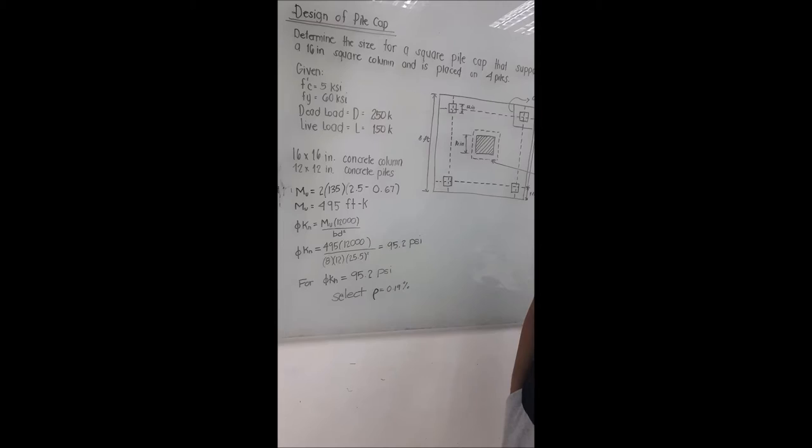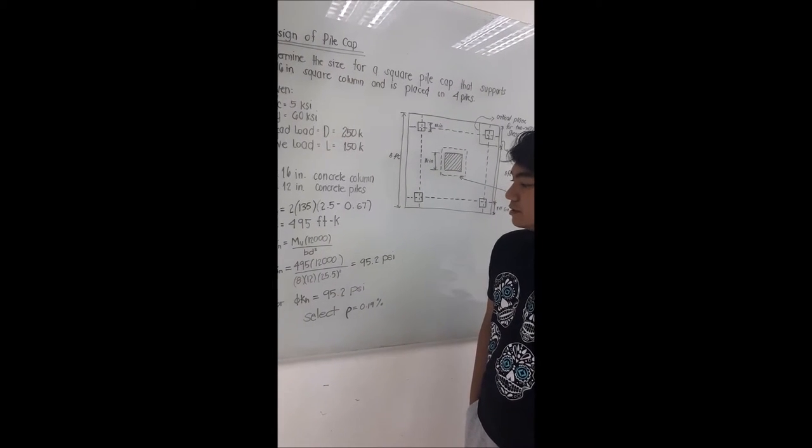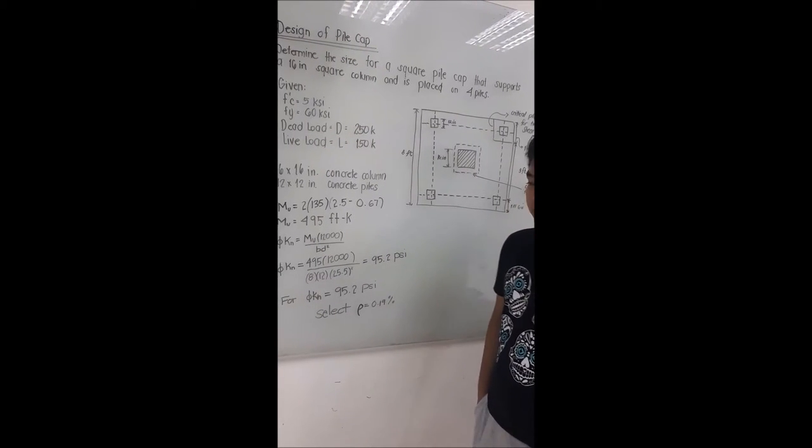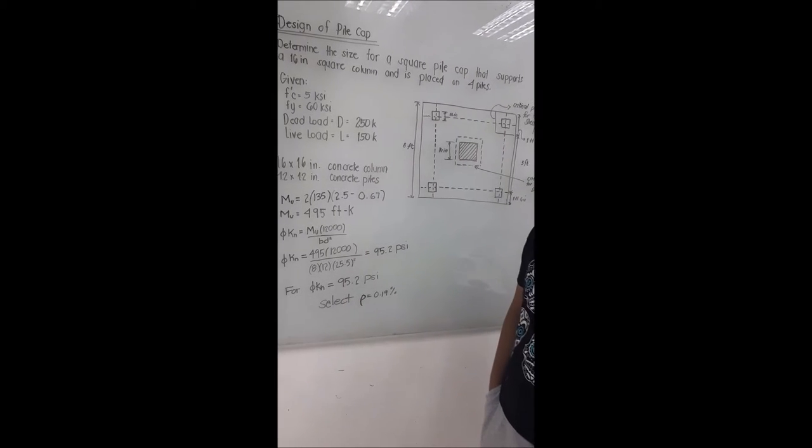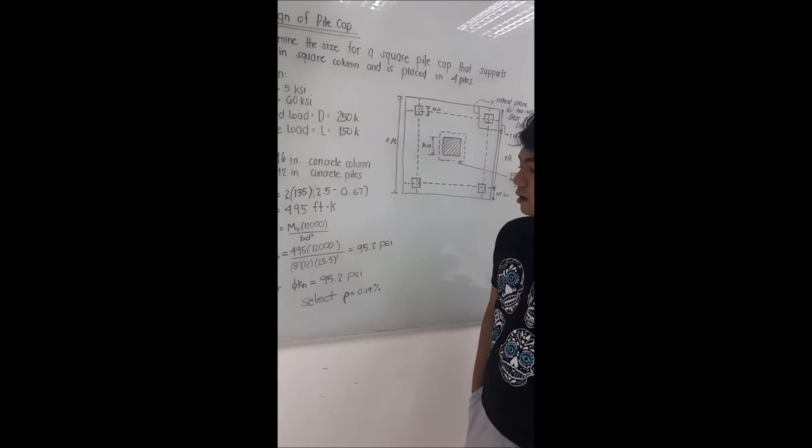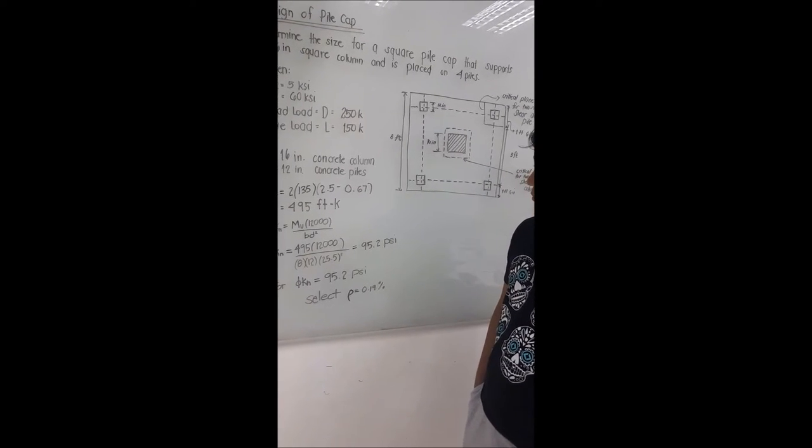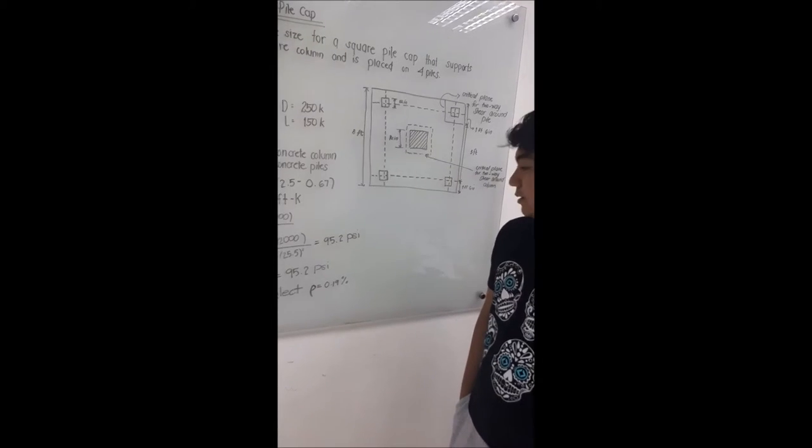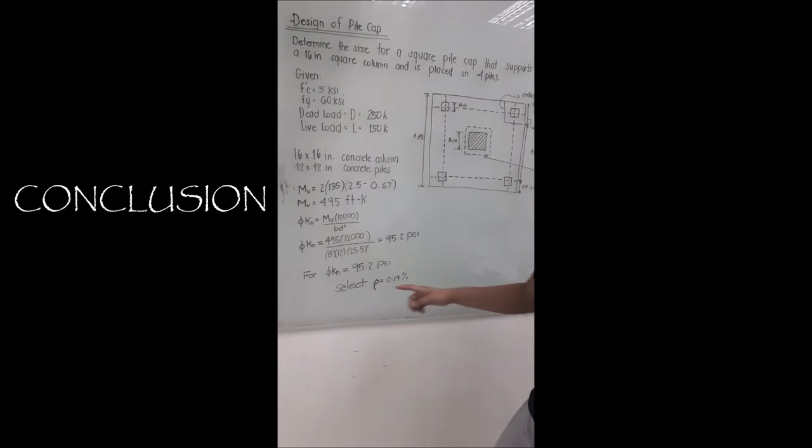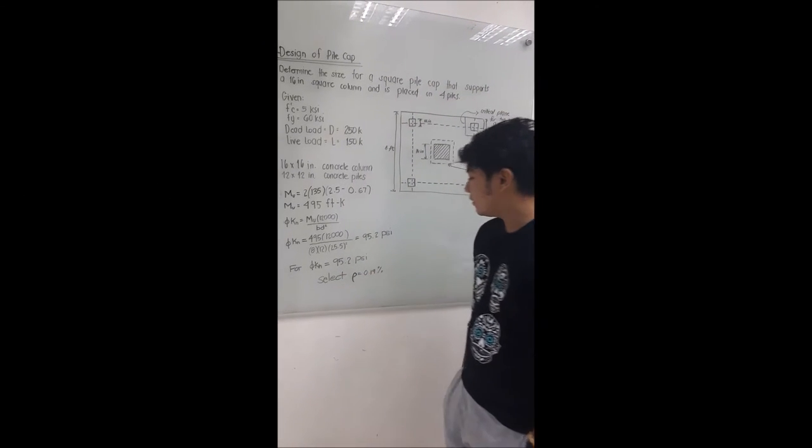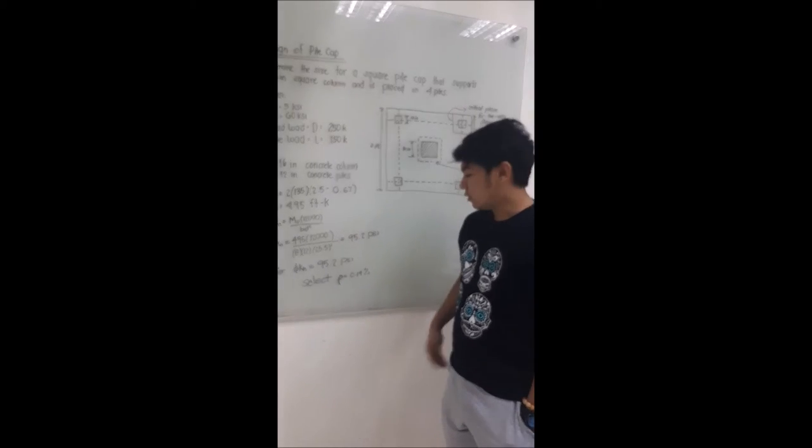For the reinforcement ratio calculation, we use the formula of MU times 12,000 over phi times effective depth squared. Using the values of 495 times 12,000 over 0.9 times 12 times 25.5 squared we get the value of 95.2 PSI. From this we select rho as 0.0019.